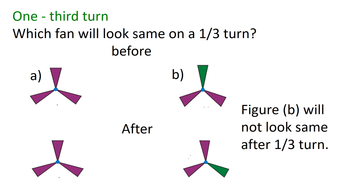One third turn. Which fan will look the same on a one third turn? Here you can see two fans, A and B. Fan A has all three blades in purple color. Fan B has two purple colored blades and one green colored blade. After the turn, fan A looks the same as above. But fan B does not look the same because of the change in color in the blade of the fan.